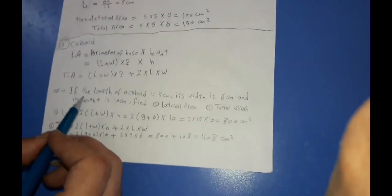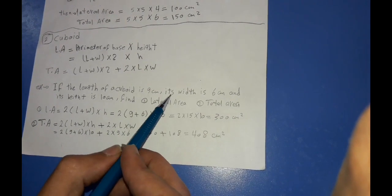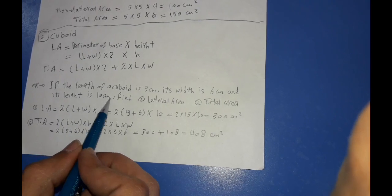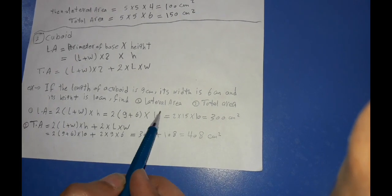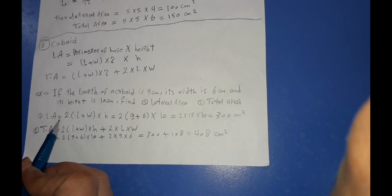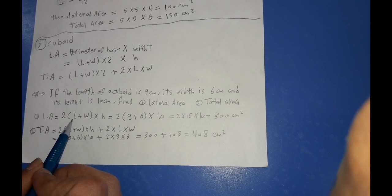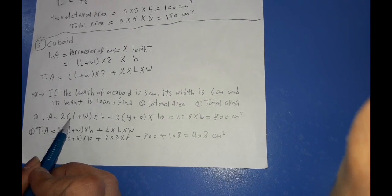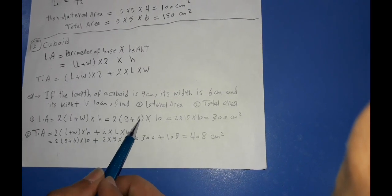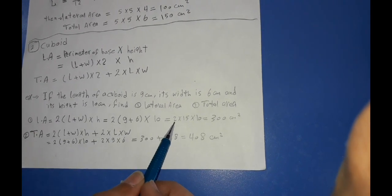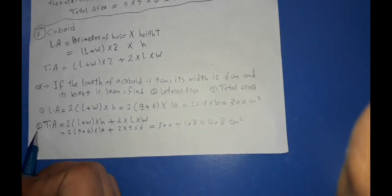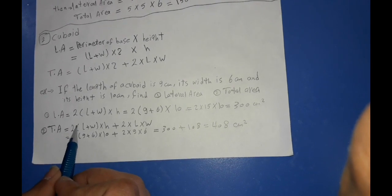An example: the length of a cuboid is 9 cm, its width is 6 cm, and its height is 10 cm. Find the total area and the lateral area. The lateral area equals 2 × (length + width) × height = 2 × (9 + 6) × 10 = 2 × 15 × 10 = 300 cm².